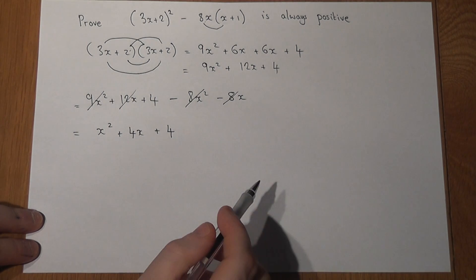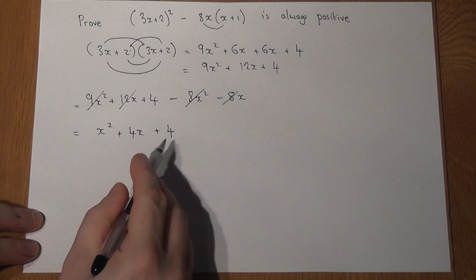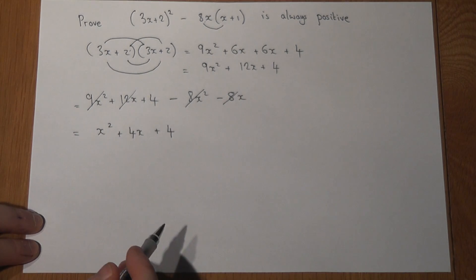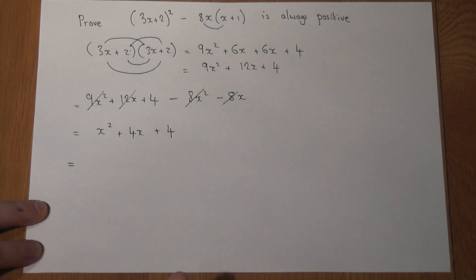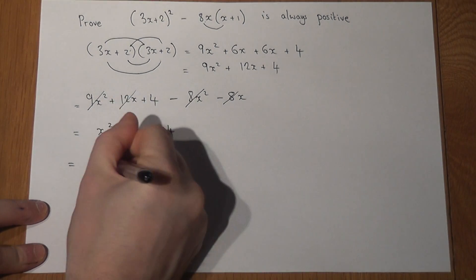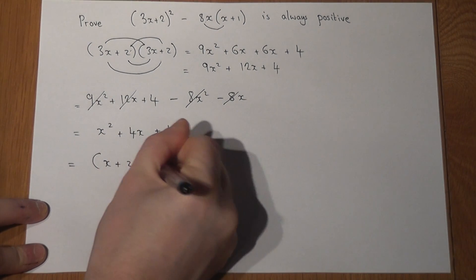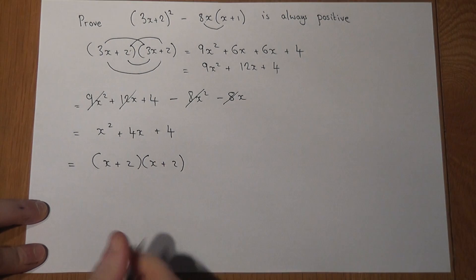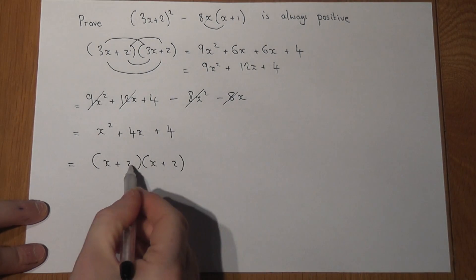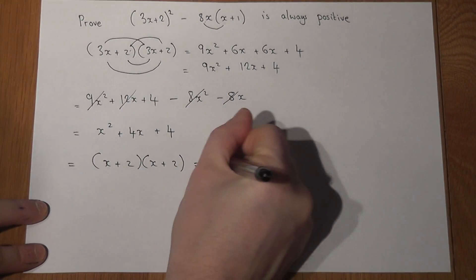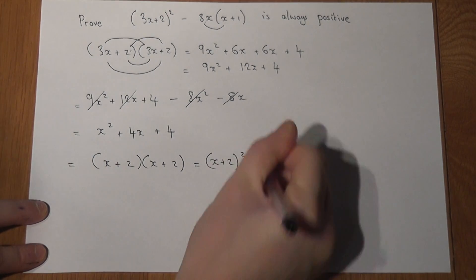Now the final trick is that sometimes your answer at the end will actually factorise. And if it does, try to do so. Well this is x plus 2 bracket x plus 2. 2 times 2 is 4. 2 plus 2 is 4. This equals x plus 2 squared.